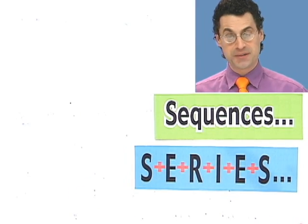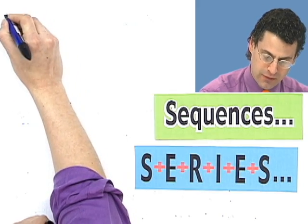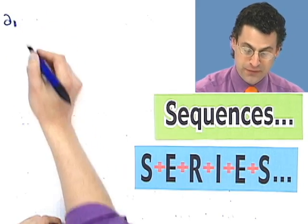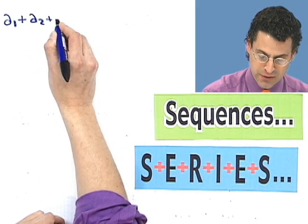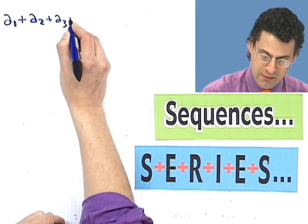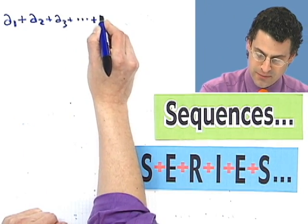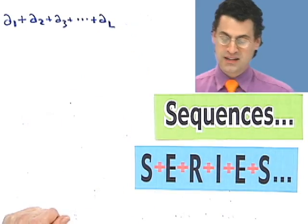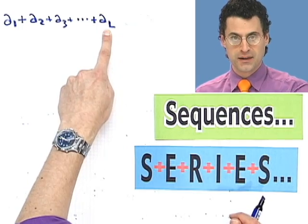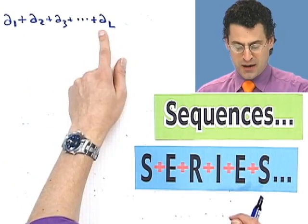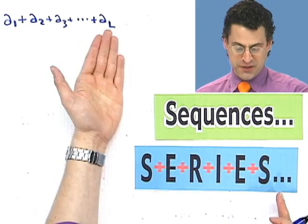So a series is nothing more than adding up a sequence. Let me write that down for you in plain English. So I'd have the first term of my sequence, and then I'd add it to the second term, and I'd add it to the third term. Now, what a lot of times people do is they put like dot, dot, dot, meaning and so forth, and then they put the last term, call it a sub l. That's what I mean by a series. It's just the sum of some of the terms in a sequence.